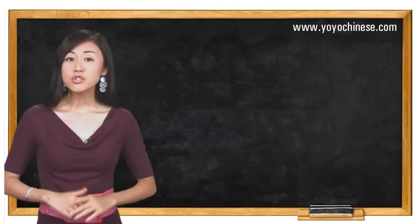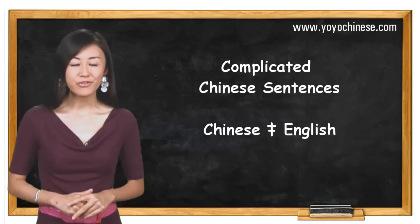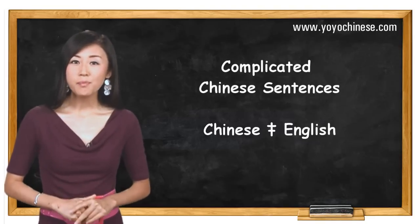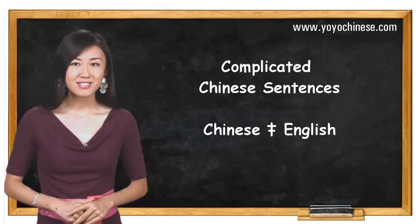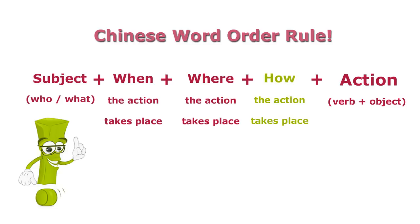When it comes to complicated Chinese sentences, the word order is going to be different from English. And here's the rule. In a complex Chinese sentence, the word order goes like this: subject — such as who or what — and when the action takes place, where the action takes place, how the action takes place, and then the action.